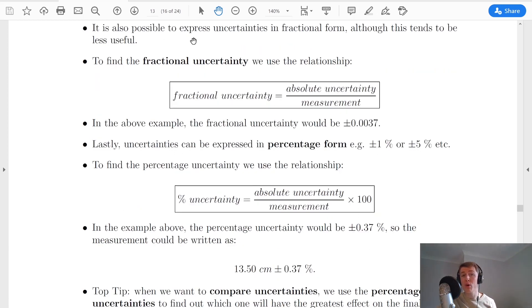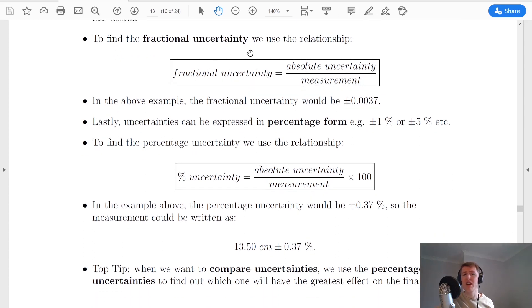Moving on, it's also possible to express uncertainties in fractional form although this tends to be less useful and this was one we didn't look at in the higher course. To find the fractional uncertainty we use this relationship: fractional uncertainty = absolute uncertainty / measurement.